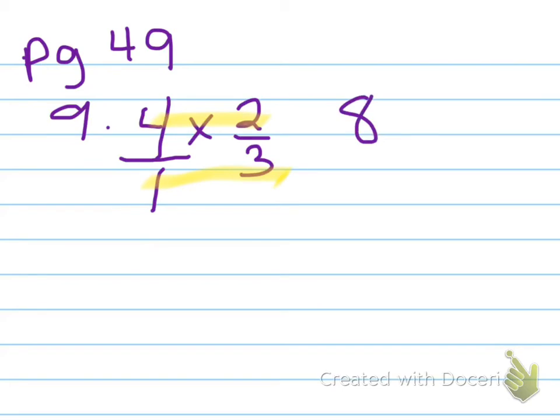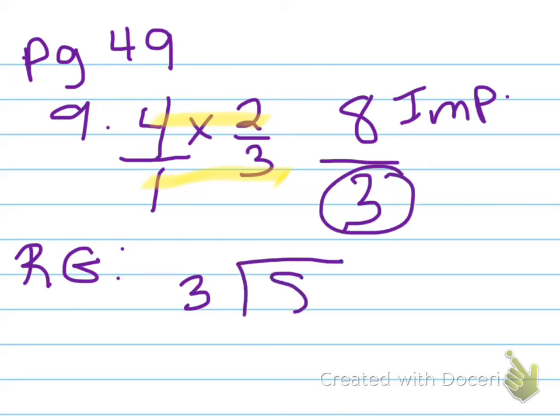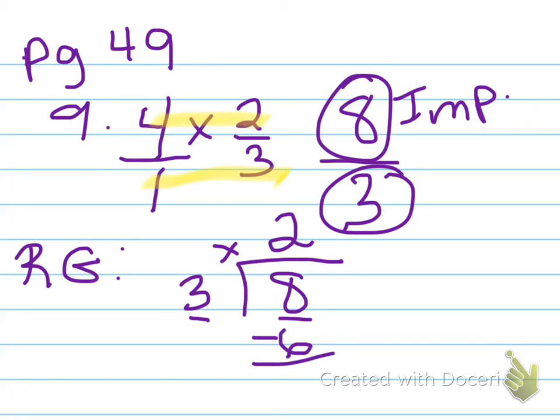4 times 2 is 8. 1 times 3 is 3. Now you know that this is improper and we must regroup. When we regroup, that means we take our denominator, put it outside of a division house, put the numerator in. How many times will 3 go into 8? 3 times 1 is 3, 3 times 2 is 6, 3 times 3 is 9. 9 is too big. So the biggest we can go is 6. It goes in twice. 2 times 3 is 6. Minus 6, you get 2.